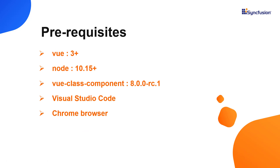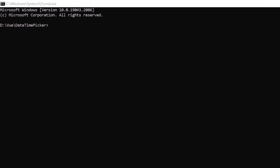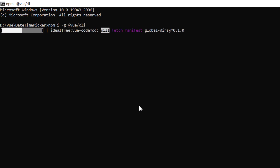Let me show you the application creation process. I'm going to create an application using the Vue CLI toolchain. Make sure you have installed the latest version of Vue, Node, and Vue class component. In the command prompt, run the command npm install global Vue CLI.